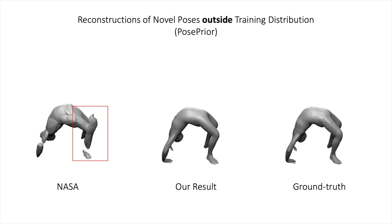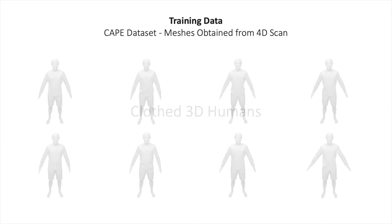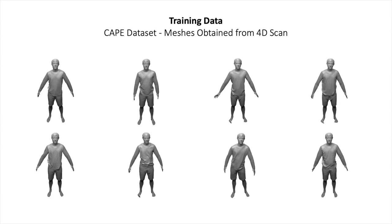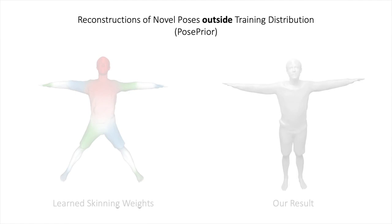We now show results of our method on clothed human subjects. We train our model on the CAPE dataset with meshes obtained from 4D scans. In this setting, we illustrate both the learned skinning weights in canonical space as well as the reconstruction for novel, challenging poses outside the training distribution.